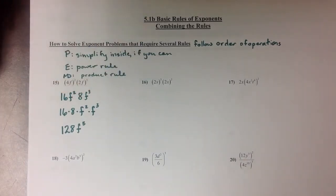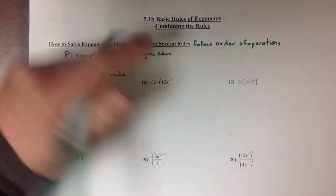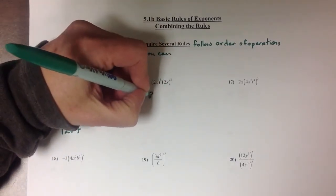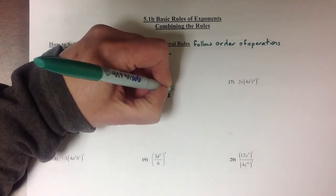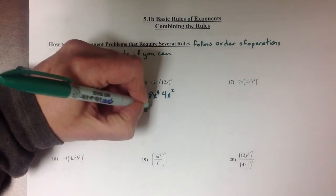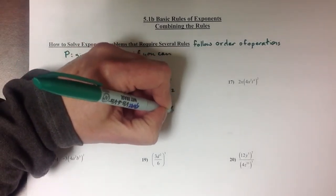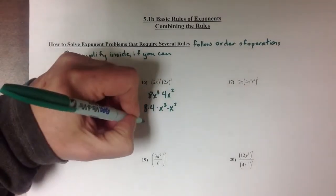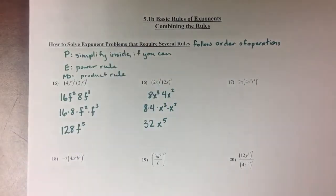Looking at this next one, looks very similar to the one we just tried. 2x cubed is going to give me 8x cubed and 2x squared is 4x squared. Once again, I regrouped, put my numbers and my variables near one another, and I'm left with 32x to the 5th.